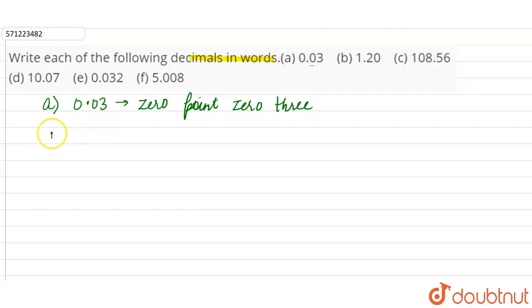Similarly, B part is 1.20. So this is not 1.20, this is 1.20. One point two zero.